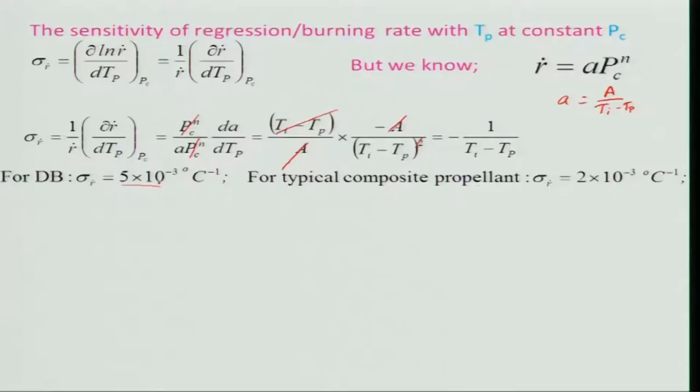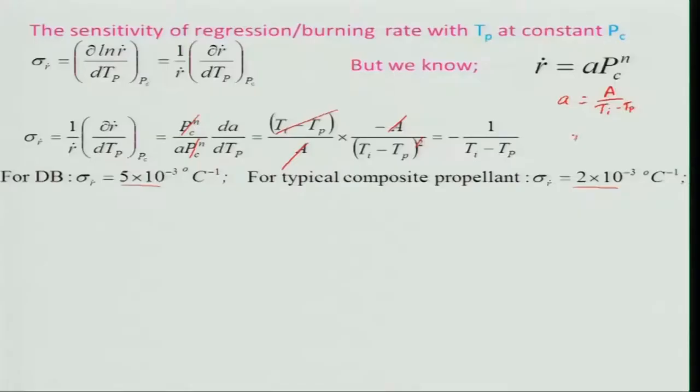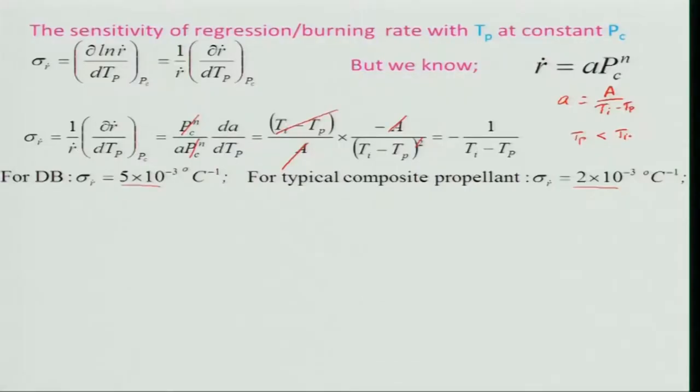T_P should always be less than T_i; if T_P equals T_i then sigma_r-dot becomes infinity, which leads to catastrophic problems. One has to worry about this. Now, how is chamber pressure sensitive to grain temperature? Chamber pressure P_C is a function of (A_B / A_t), and incorporating the temperature-dependent coefficient a = A/(T_i − T_P), one can define the pressure sensitivity to grain temperature.